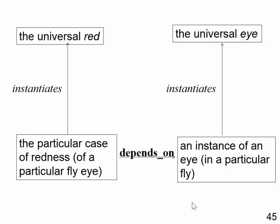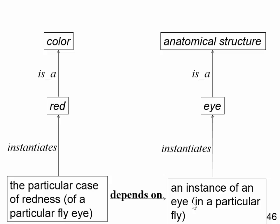Somewhat more complicatedly: you're examining flies, looking at fly eye phenotypes. You see an instance of an eye in a particular fly, and that instantiates the universal eye. You see that the eye is red — so you see a specific case of redness in this particular eye, and that instantiates the universal red. Red is a color and eye is an anatomical structure, so when you see an eye you also see an instance of anatomical structure, and when you see a redness you also see an instance of color. Instance inherits through the taxonomical hierarchy of the ontology. At the very top we have independent continuant — the BFO universal category to which anatomical structure belongs as a subtype — and quality, the BFO category to which color belongs as a subtype.